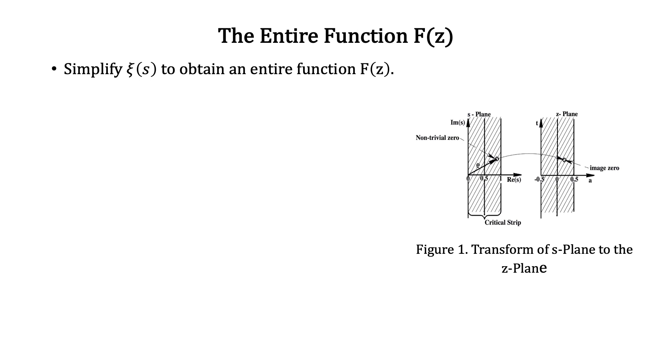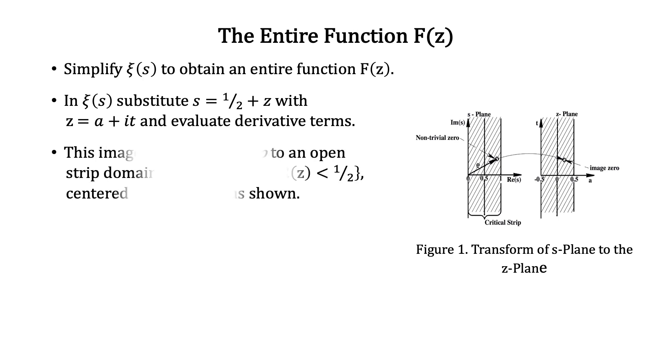Simplify ξ(s) to obtain an entire function F(z). In ξ(s), substitute s = 1/2 + z with z = a + it and evaluate derivative terms. This images the critical strip to an open strip domain centered on the t-axis, as shown.